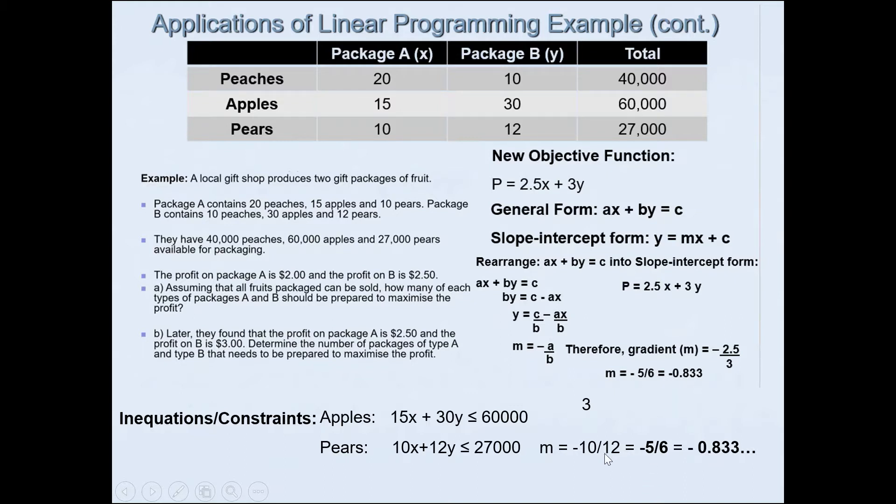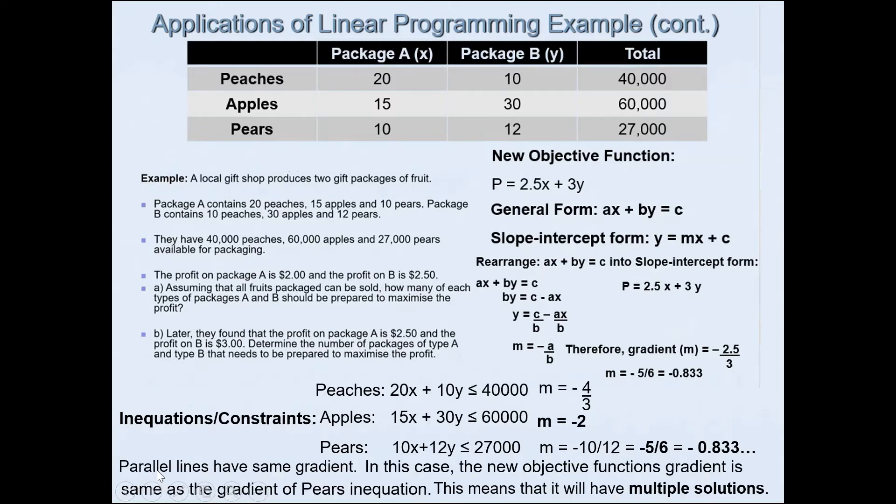You can clearly see now that this one here is having the same gradient as our new objective function. Parallel lines have the same gradient. In this case, the new objective function's gradient is same as the gradient of the pears equation. This is telling us that it will have multiple solutions. Our goal next is to determine the possible solutions for this problem.